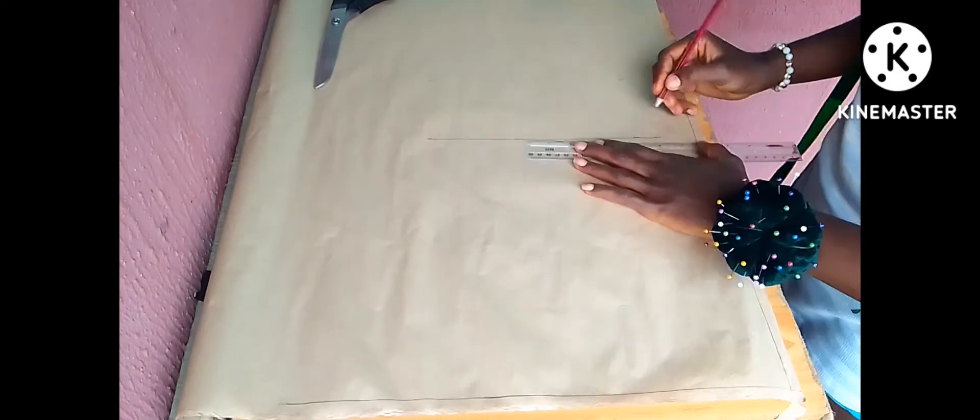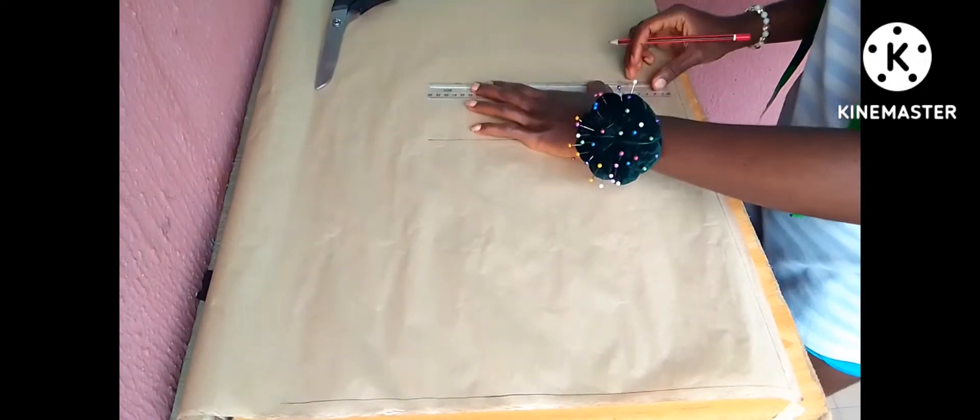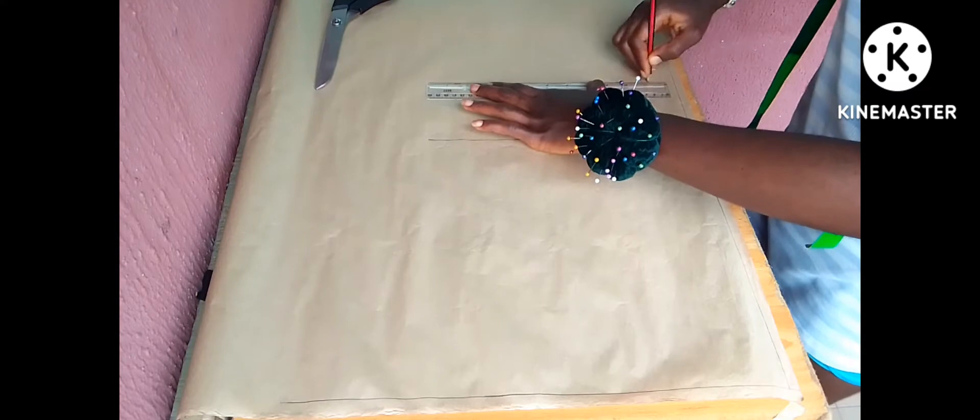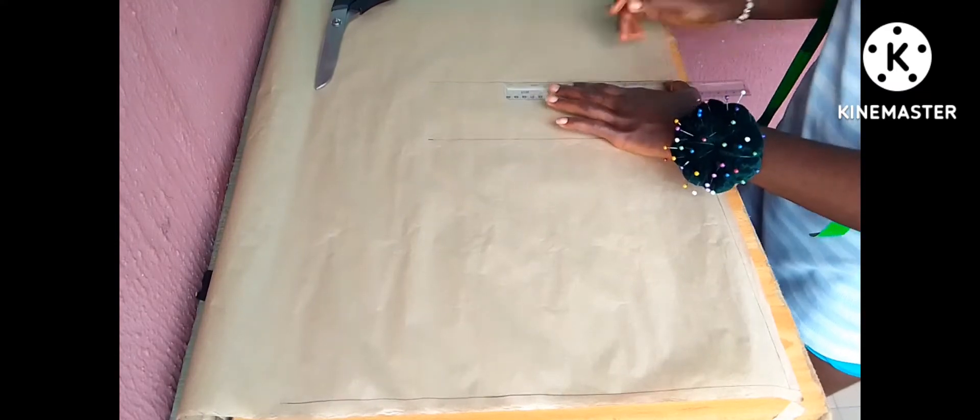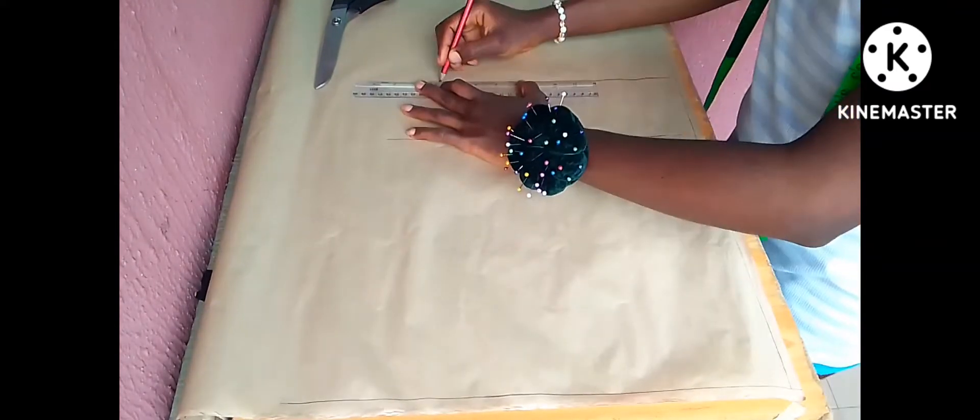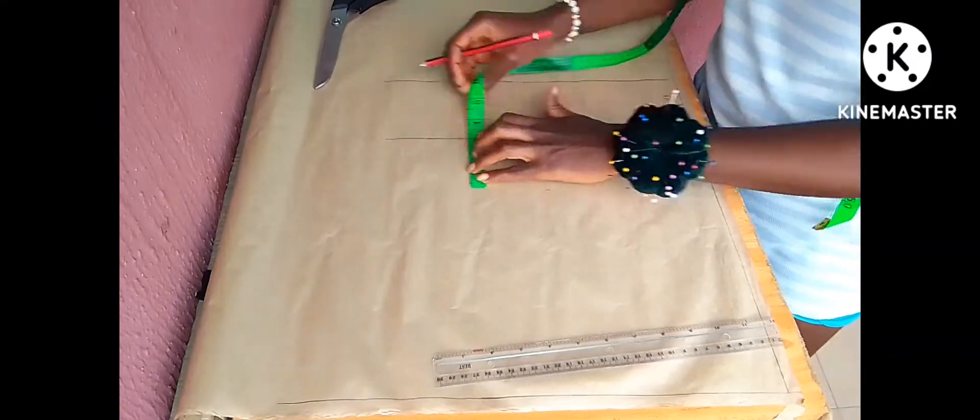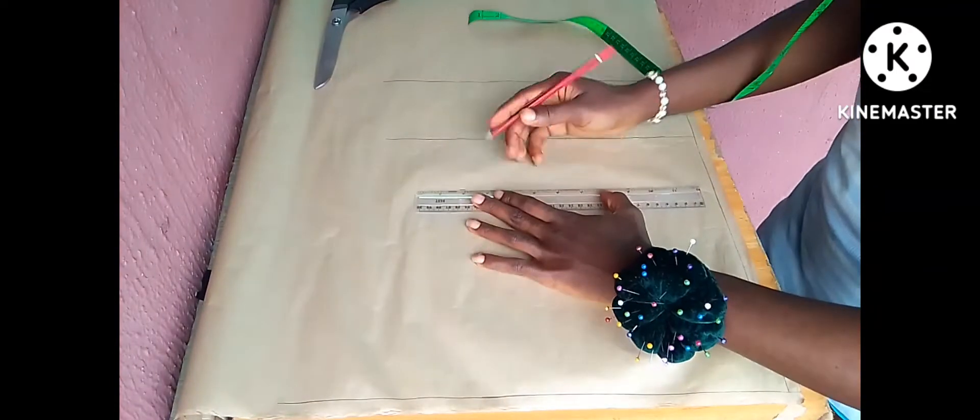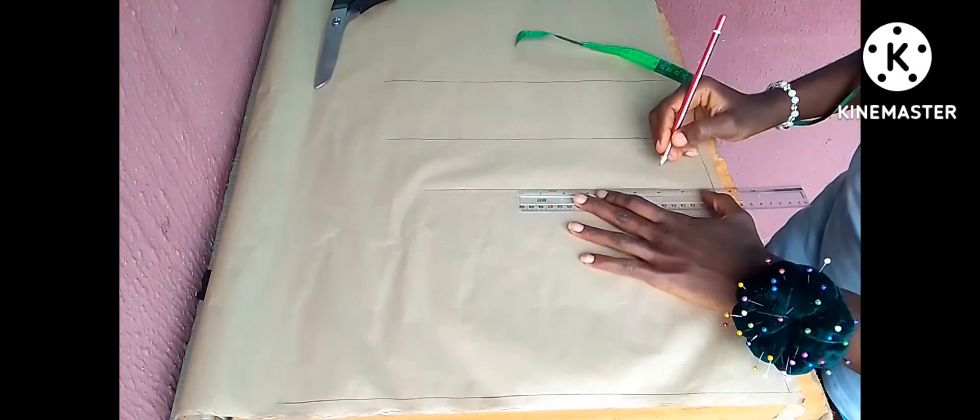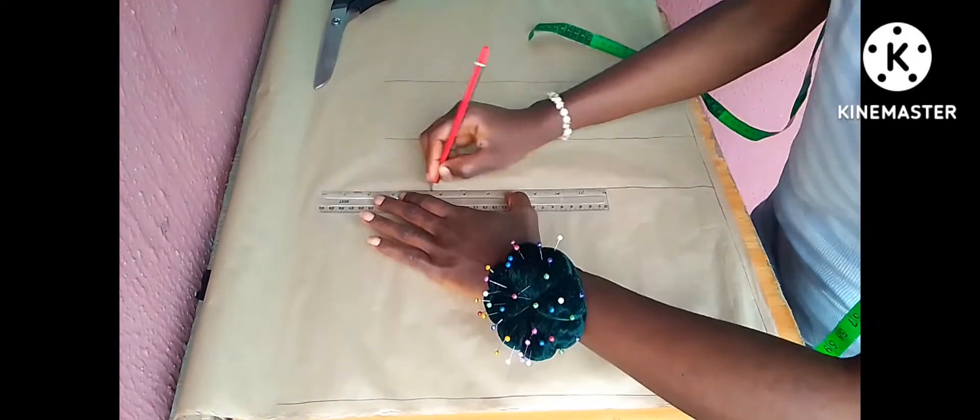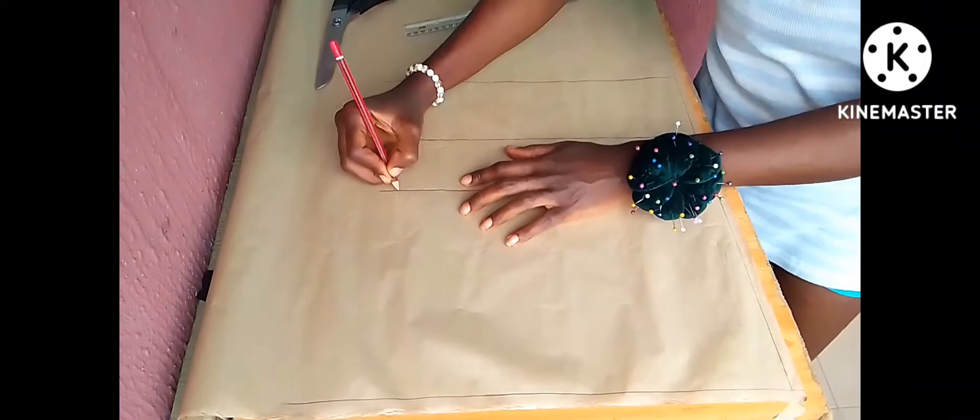Now to get my bust point, what I usually do is to take 3 inches from my underburst upwards because I'm not so busty. But for people that are a bit busty, I usually add 3.5 or probably 4 inches depending on the size of your bust. But for me, I usually take 3 inches up from my underburst to get my bust point.